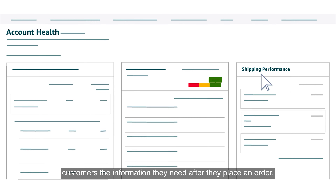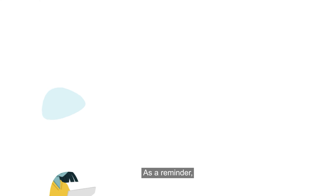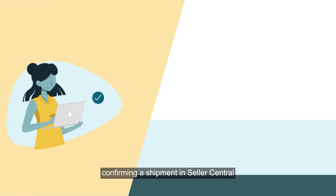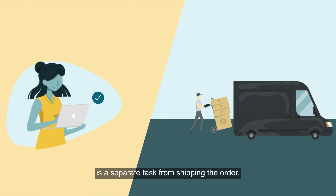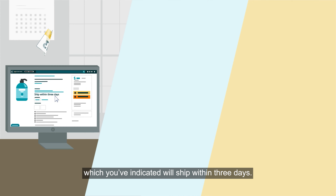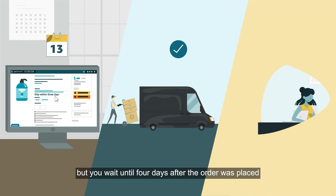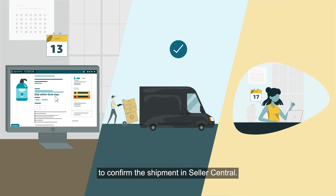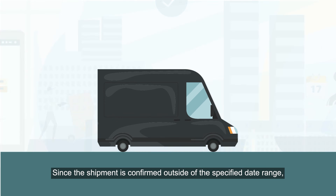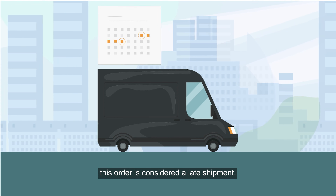The shipping performance metric can help you make sure you're giving customers the information they need after they place an order. The late shipment rate metric represents the total percentage of orders that you confirmed after the order's expected shipping date. As a reminder, confirming a shipment in Seller Central is a separate task from shipping the order. For example, a customer orders one of your products which you've indicated will ship within three days. You ship the order within this time frame, but you wait until four days after the order was placed to confirm the shipment in Seller Central. Since the shipment is confirmed outside of the specified date range, this order is considered a late shipment.